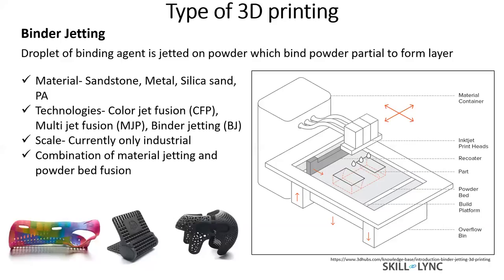The materials that can be used for binder jetting are sandstone, metal, silica sand, and PA. The technologies that use the same principle are ColorJet fusion, MultiJet fusion, and binder jet. In ColorJet fusion, you are jetting both your binder agent and coloring agent, which results in a colored print. In the other two, you just jet the binder agent, so you end up with a single-color material. This kind of technology is also only on industrial scale as of now.